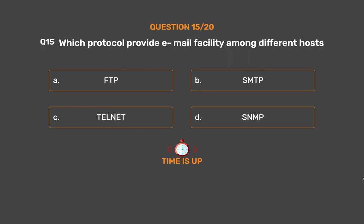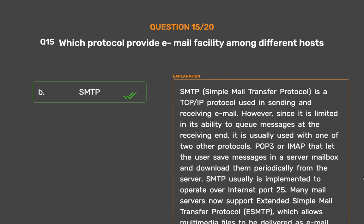The correct answer is Option B: SMTP. SMTP, Simple Mail Transfer Protocol, is a TCP/IP protocol used in sending and receiving email. However, since it is limited in its ability to queue messages at the receiving end, it is usually used with POP3 or IMAP, which let the user save messages in a server mailbox and download them periodically. SMTP usually operates over Internet port 25. Many mail servers now support Extended SMTP (ESMTP), which allows multimedia files to be delivered as email.